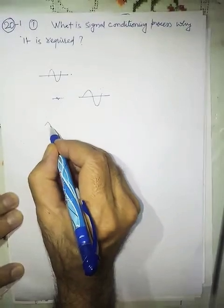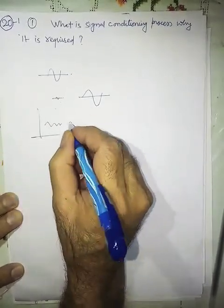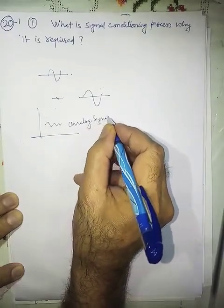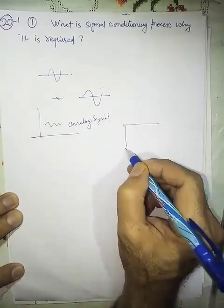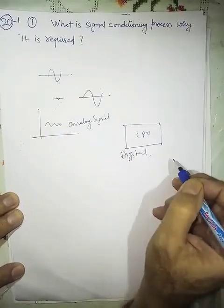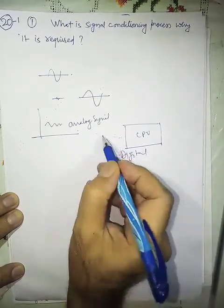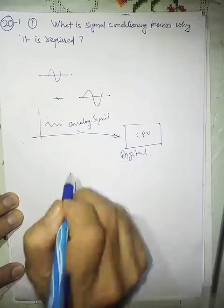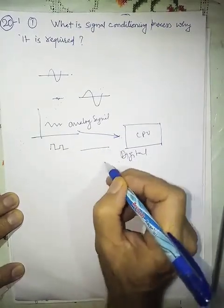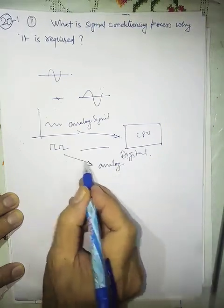Now many times my signal, this continuous wiring signal, is known as an analog signal, and my processor here may be digital in nature. So this analog signal cannot be conveyed to a digital processor, or vice versa. If my signal here is digital in nature and here I have an analog processor, so this again cannot be conveyed to this.